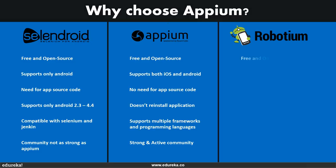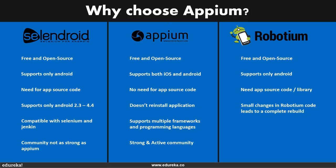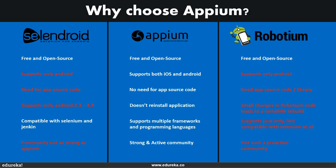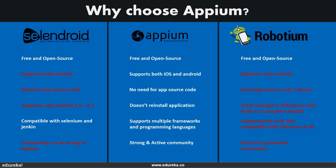Robotium is also a free and open source automation testing tool, but it only supports Android. It also needs the app source code and library. Small changes in Robotium code could lead to completely rebuilding the application. Robotium only supports Java, so languages like Kotlin are not supported. It is not compatible with Selenium and Jenkins, and it doesn't have a strong community. As you can see, these limitations draw them back when compared to Appium, which outshines its market competitors Selendroid and Robotium. You can compare Appium with other free and open source tools and Appium will stand out as the best.